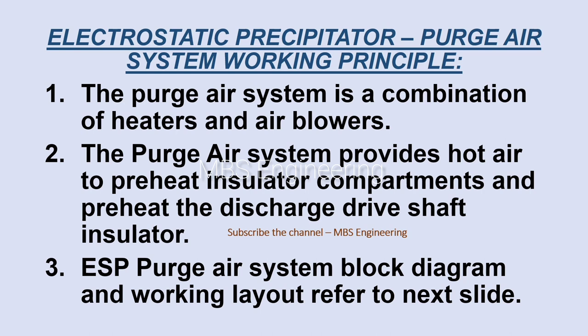Next, we are going to discuss and understand the working and operation principle of the purge air system in the electrostatic precipitator. Point one: the purge air system is a combination of heaters and air blowers. Point two: the purge air system provides hot air to preheat insulator compartments and preheat the discharge drive shaft insulator. Point three: please refer to the ESP purge air system block diagram and working layout on the next slide.